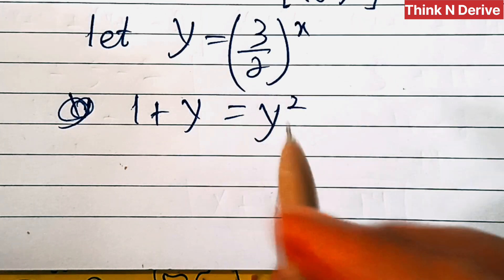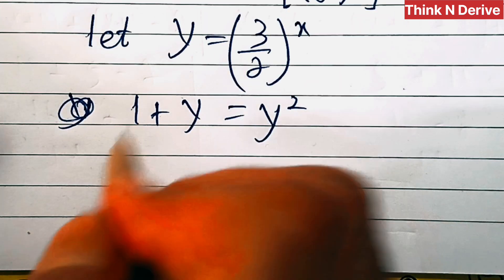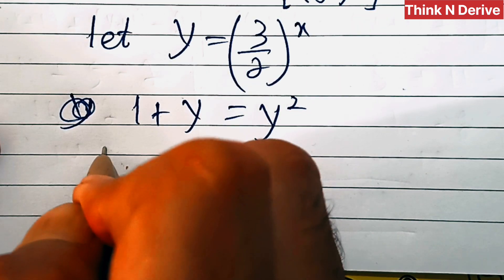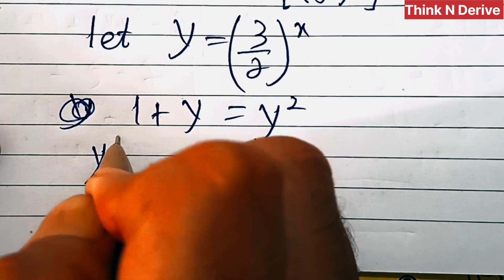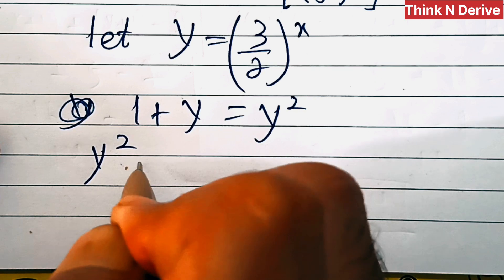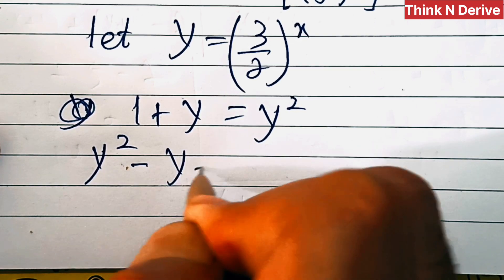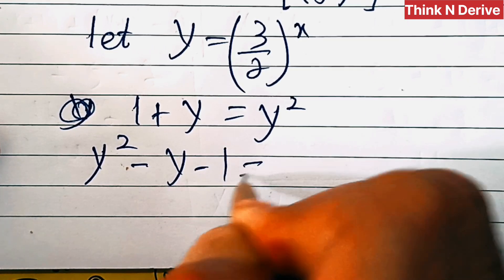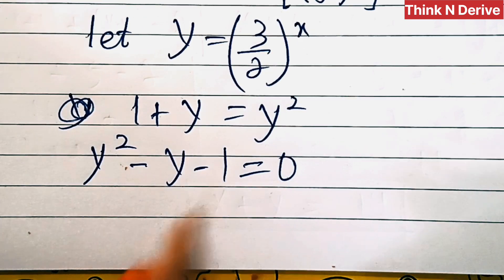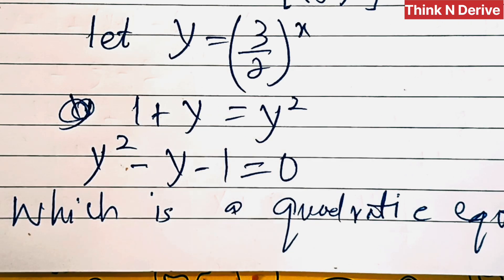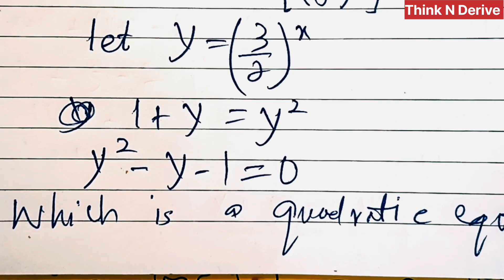Let's write this equation in standard form. So this is y squared minus y minus 1 equals 0, which is a quadratic equation.